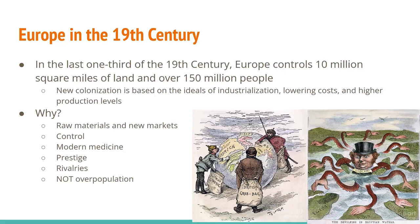On the right, this is supposed to be an octopus representing England, and you can see England is slowly taking over more and more of the world and even strangling parts of it.